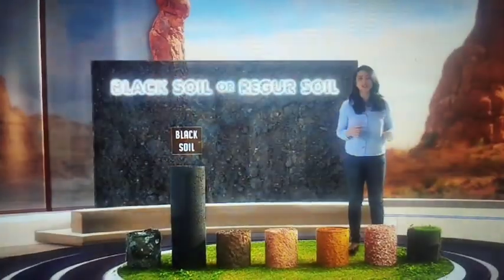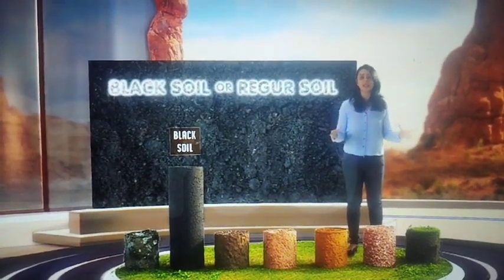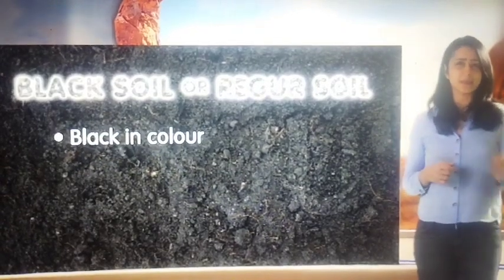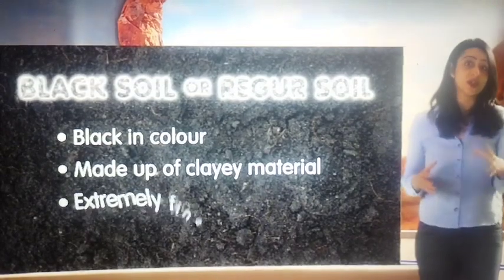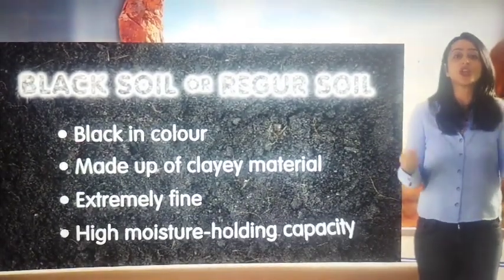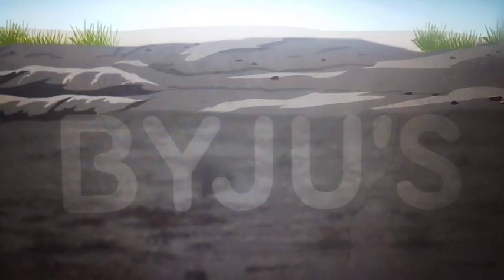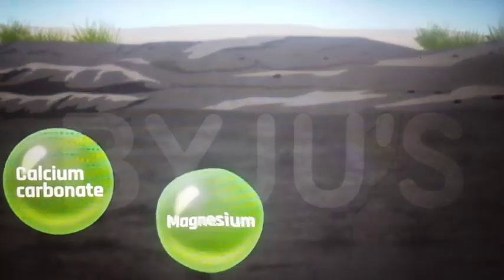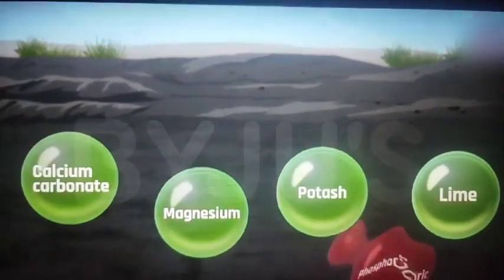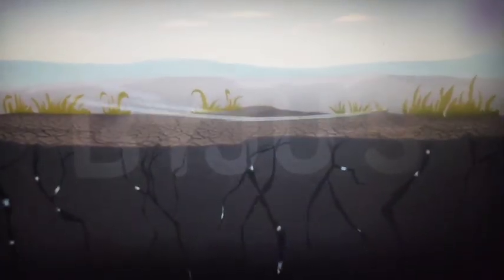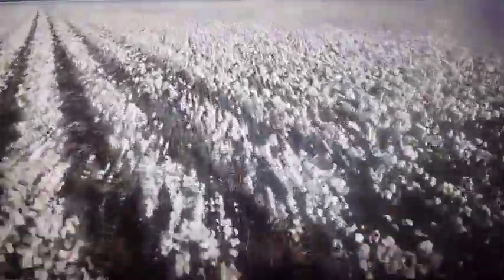Next up is black soil, or regar soil. As the name suggests, this soil is black in colour and is made up of clay material, making it extremely fine. It is well known for its moisture holding capacity. It gets sticky when wet and becomes difficult to work on, and that's why it is tilled immediately after the first shower or during the pre-monsoon period. It is rich in soil nutrients such as calcium carbonate, magnesium, potash and lime, but poor in phosphoric contents. During hot weather, it develops deep cracks which helps in proper aeration of the soil. It is suitable for cultivating cotton, which is why it is also called black cotton soil.